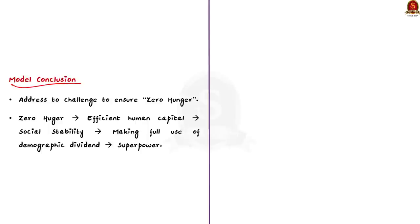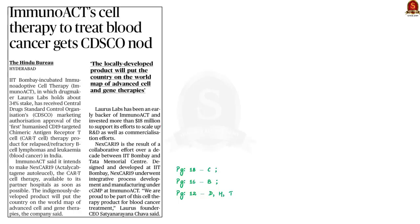In the conclusion, mention that only by addressing these challenges can India achieve its dream of zero hunger. Only by achieving zero hunger can our country create an efficient human capital and ensure social stability. This will help India realize its full demographic dividend and become a superpower. I hope we have efficiently addressed the question and learned a lot about India's hunger paradox and government initiatives.